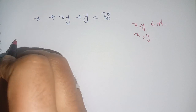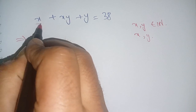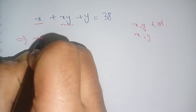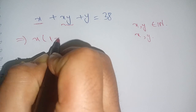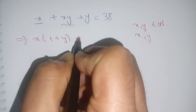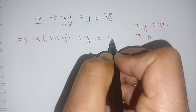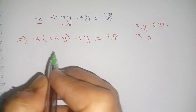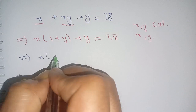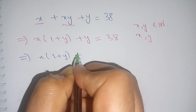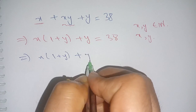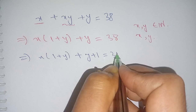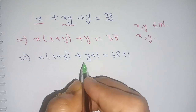Let us solve this. We take out x from the first term as well as the second term, and we get x times (1 plus y) plus y is equal to 38. In the next step, we write this as x times (1 plus y) plus (y plus 1) is equal to 38 plus 1.